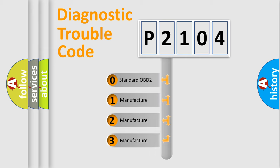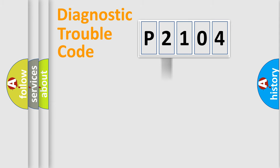If the second character is expressed as zero, it is a standardized error. In the case of numbers 1, 2, or 3, it is a more specific expression of a car-specific error.